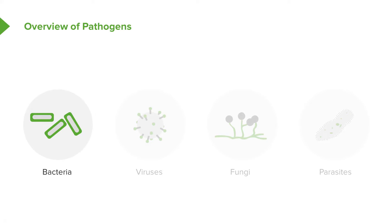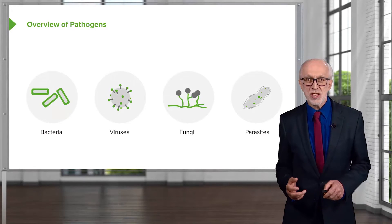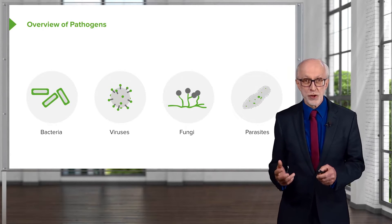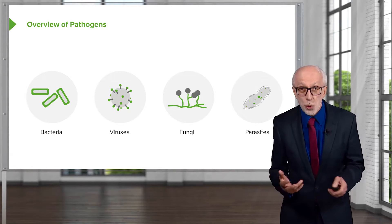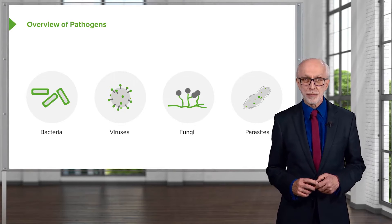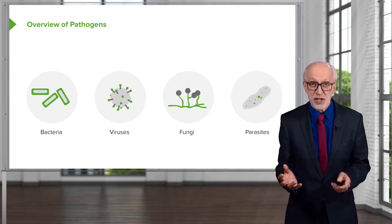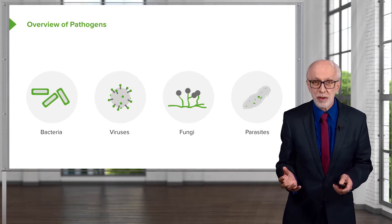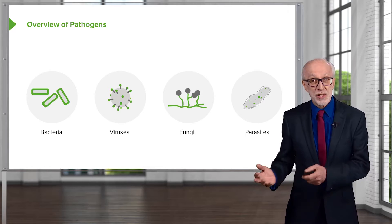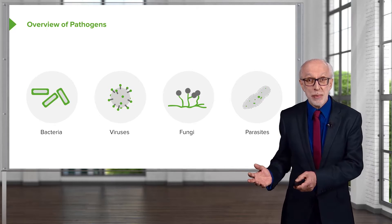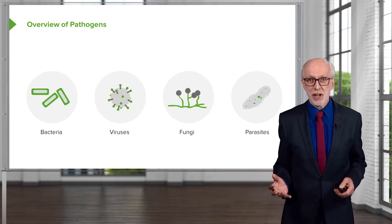There are many different types of pathogens that we come across all the time: bacteria, viruses, fungi, and parasites. So the immune system actually has quite a tough job to do because it has to recognize all these different types of pathogens. Some of them, like viruses, are incredibly small. Others, like parasites, can actually be quite big — imagine a big tapeworm in your gut.